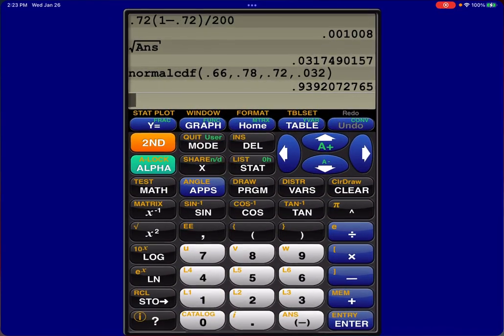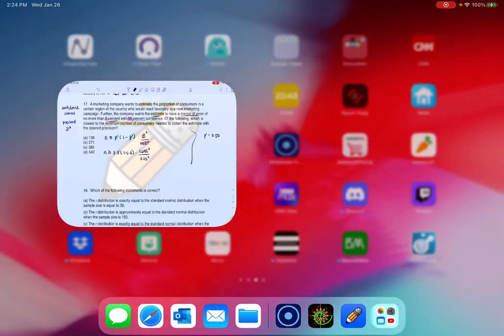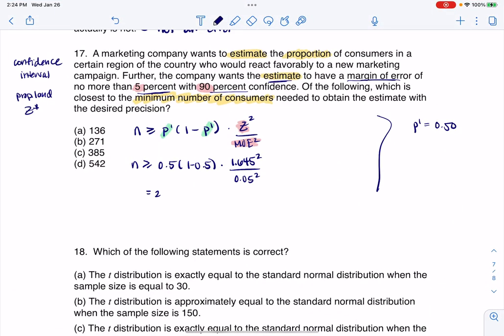So let me head to my app. So we had 0.5 times 1 minus 0.5. I need to multiply that by 1.645 squared. And then I need to divide that by 0.05 squared. And let's see what we get. It looks like about 270.603. So this is going to be equal to 270.603.